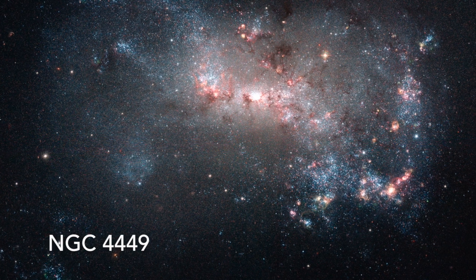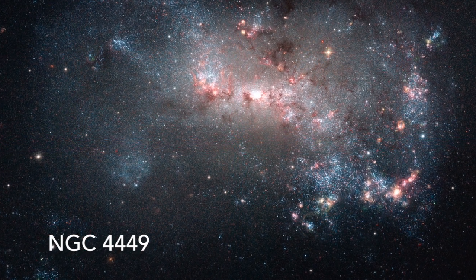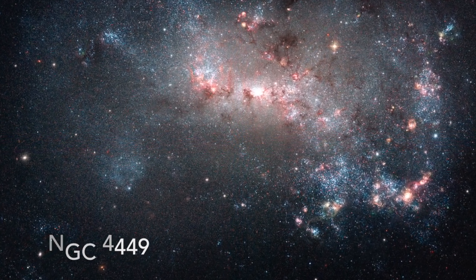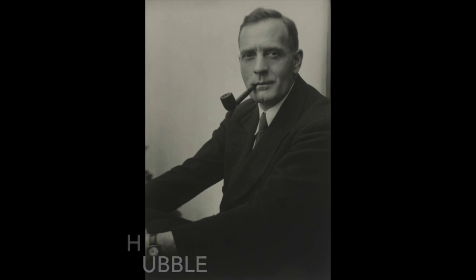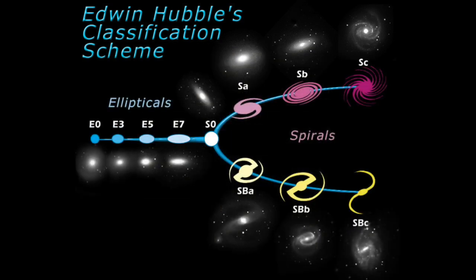How are galaxies classified? Well, in 1926, American astronomer Edwin Hubble invented a galactic morphological classification scheme known as the Hubble Sequence, commonly referred to as the Hubble Tuning Fork, based on the shape of the diagram it's traditionally represented in. This scheme is most significantly divided into two main groups: elliptical and spiral galaxies.